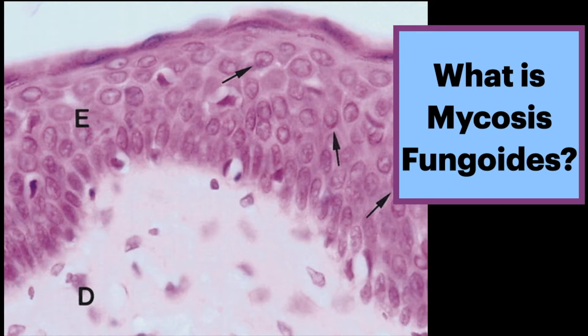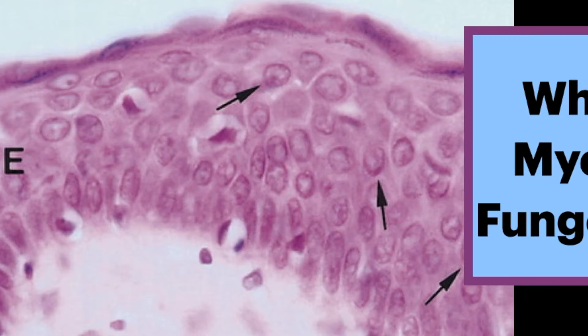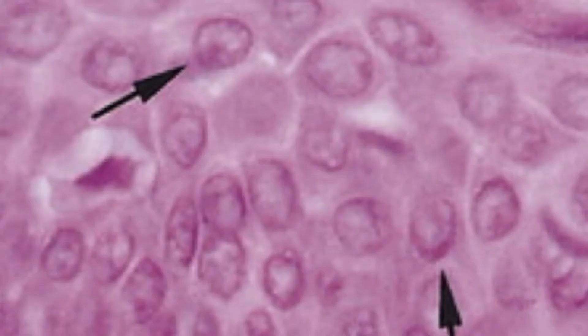This histological image shows a skin biopsy specimen with prominent epidermotropism of lymphocytes, shown by the arrows. Observe the lack of striking nuclear atypia of the intraepidermal lymphocytes.